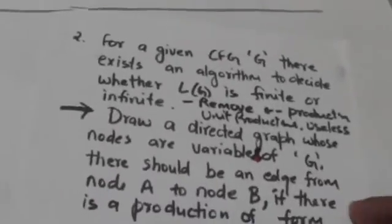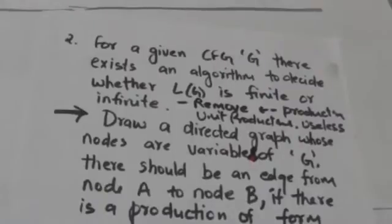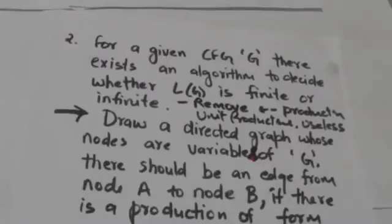For a given context free grammar G, there exists an algorithm to decide whether its language is finite or infinite. First we remove all empty productions from grammar G, then we remove unit productions and useless symbols. So grammar G is now without empty productions, unit productions, and useless symbols.